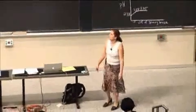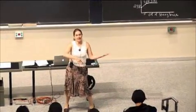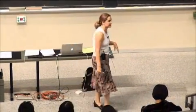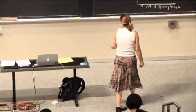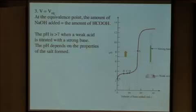At the equivalence point, you've added the same number of moles of your strong base as you had weak acid. So you've converted all of your weak acid to its conjugate base. The pH should be greater than 7. Now all you have is conjugate base. That's basic, pH should be greater than 7.